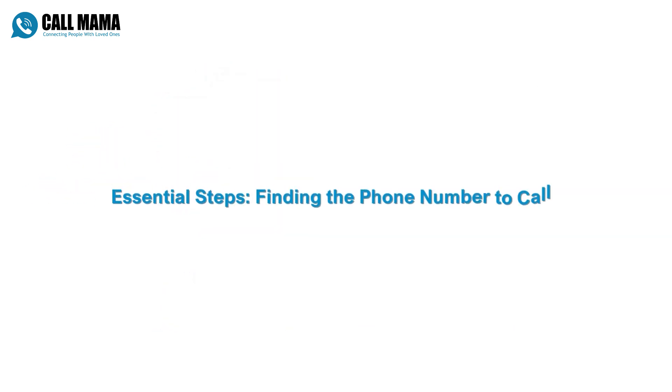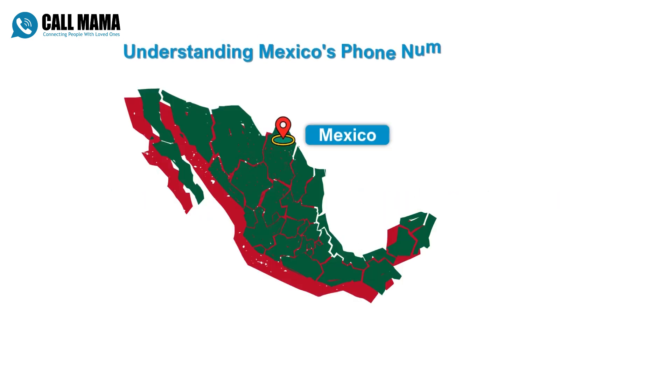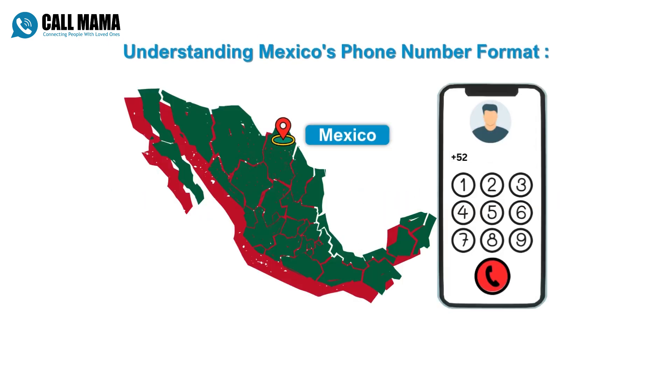Once you have that, you'll need to know the phone number you're calling. Phone numbers in Mexico typically start with a 1 followed by an 8-digit number.